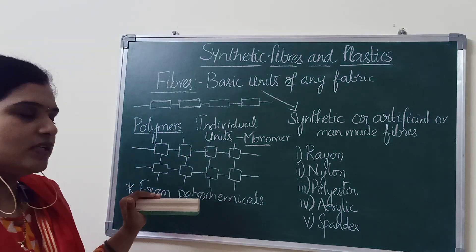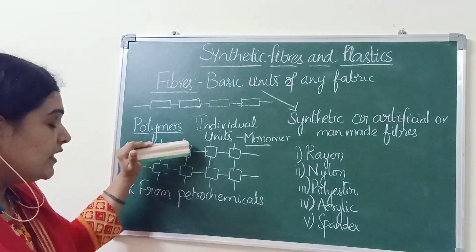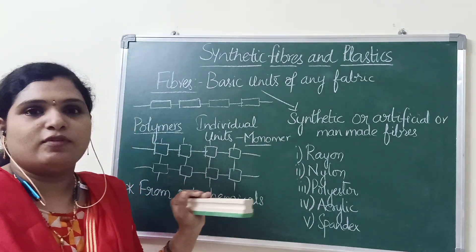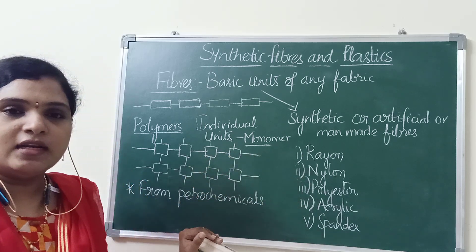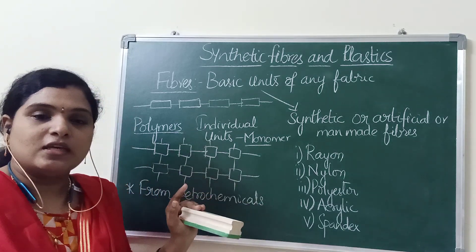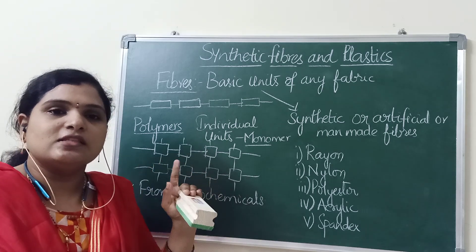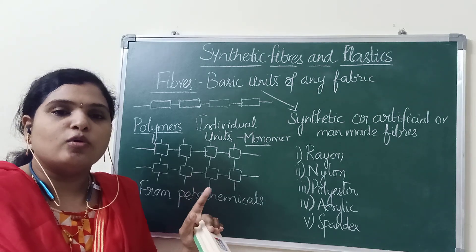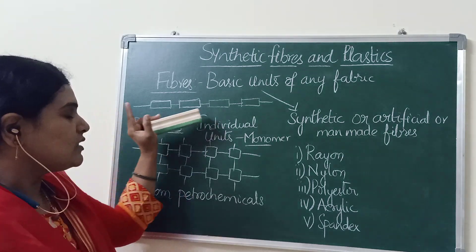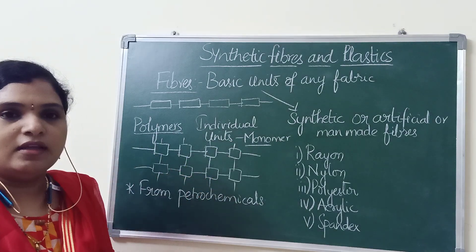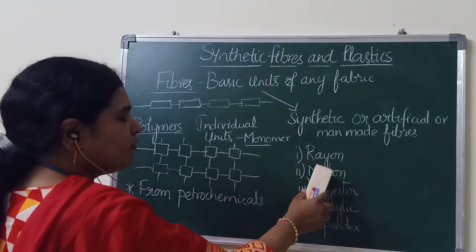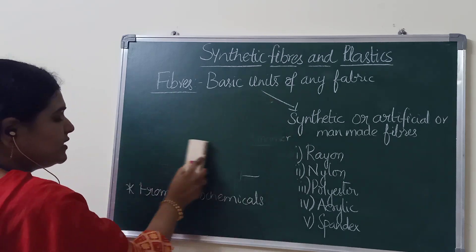So we have seen what synthetic fibers are and what their composition is. These individual monomer units will vary from type to type of synthetic fiber — it varies from fiber to fiber. But in total, it is a polymer. Whenever the term synthetic fiber comes up, you should be aware that it is a polymer consisting of monomeric units, arranged either in a straight chain or cross-linked chain.